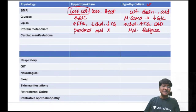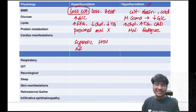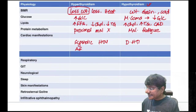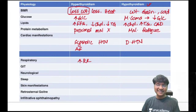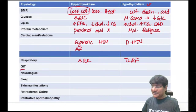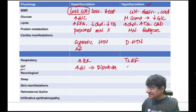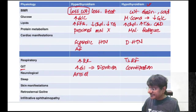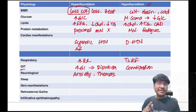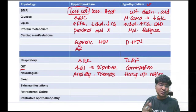Cardiac manifestations: hyperthyroidism causes systolic hypertension and arrhythmias (most common: atrial fibrillation); hypothyroidism causes bradycardia and diastolic hypertension. Respiratory: hyperthyroidism causes tachypnea; hypothyroidism causes type 2 respiratory failure (hypoxia and hypercapnia). GIT: hyperthyroidism — increased GI motility causing diarrhea; hypothyroidism — decreased GI motility causing constipation.